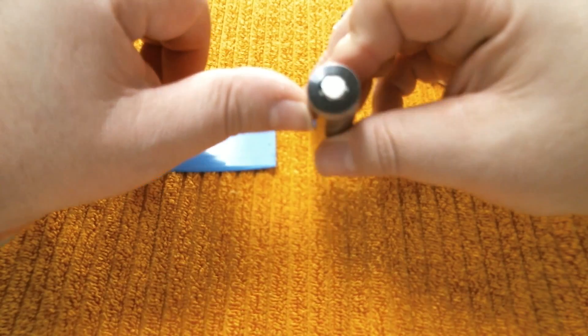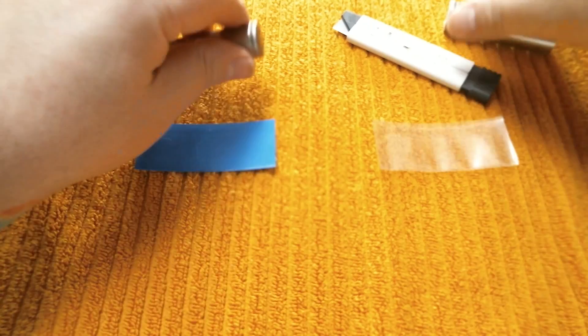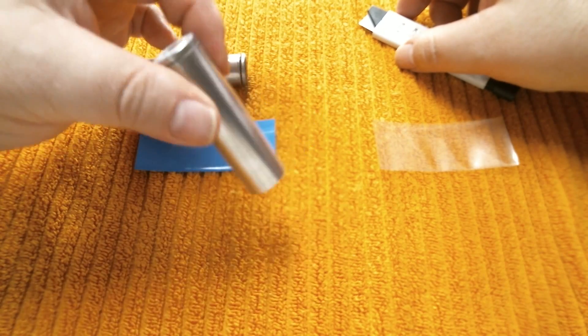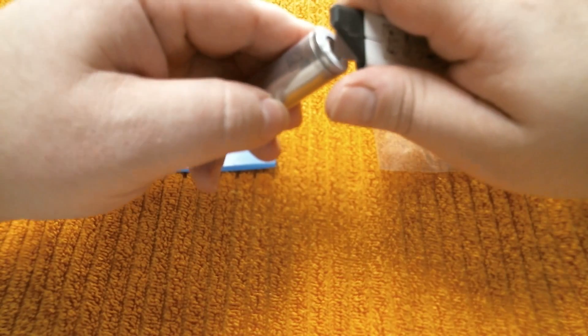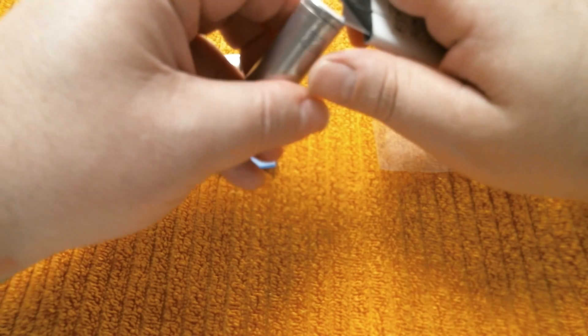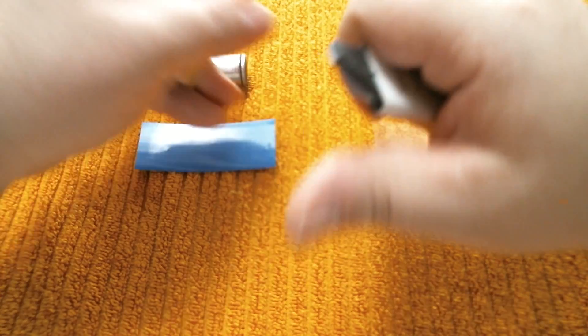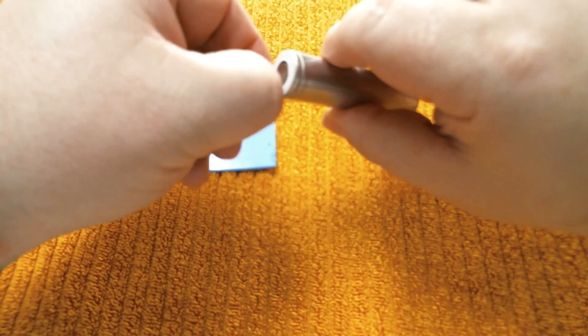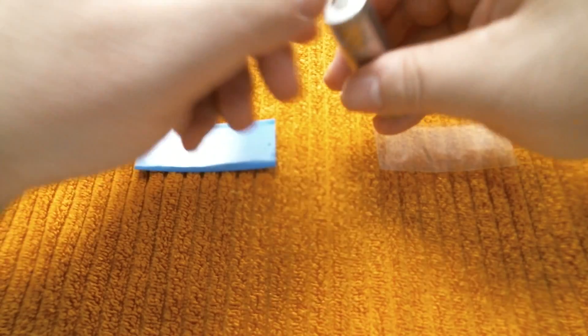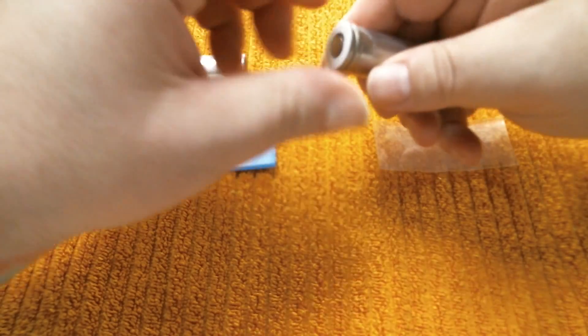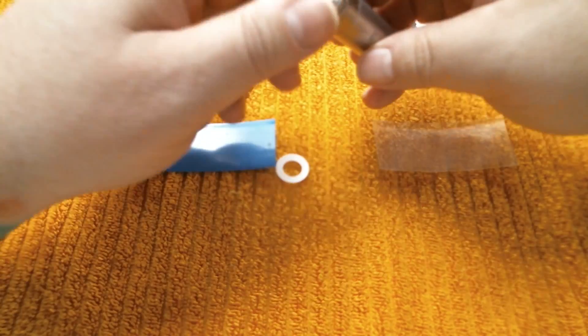Now Samsung, this does have a wrapper on, it's just got a clear wrapper just so you know. I'll cut this one off. Now you see with the Samsung, the insulator falls off.